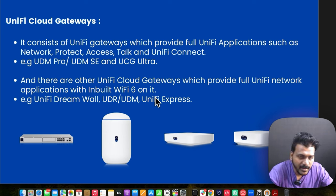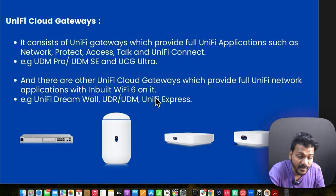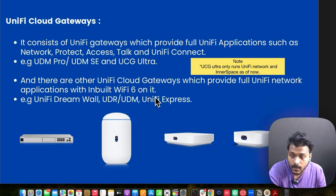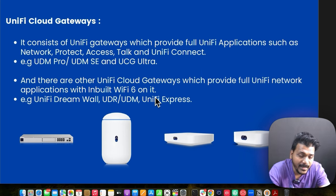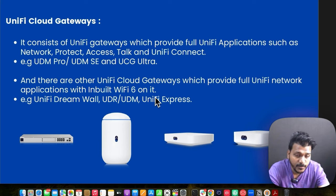UniFi Cloud Gateways consist of unified gateways which provide full UniFi applications such as UniFi Network, UniFi Protect, UniFi Access, UniFi Talk, UniFi Connect, and UniFi Identity. Examples are the UDM Pro, UDM SE, and the recently launched UCG Ultra. There are other cloud gateways that provide full UniFi Network application with built-in Wi-Fi 6, such as the UniFi Dream Wall, UDR, and UniFi Dream Machine base model, and the UniFi Express.